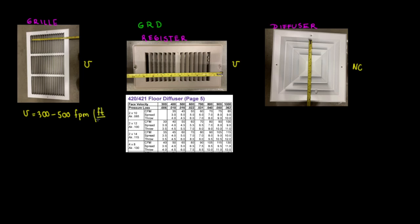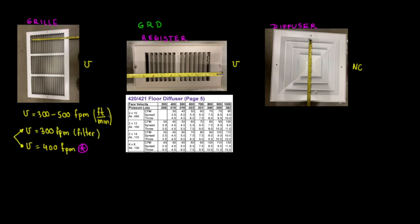To make it a standard for design, we're going to size grills based on a velocity of 400 FPM, which is the average of 300 and 500. 500 FPM would be optimum. However, if you have this return with a filter, we're going to aim for a velocity of 300 FPM instead.